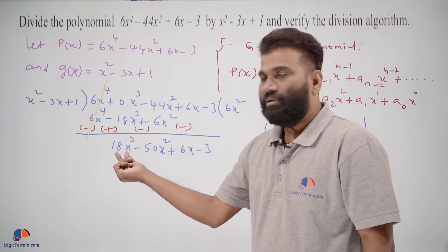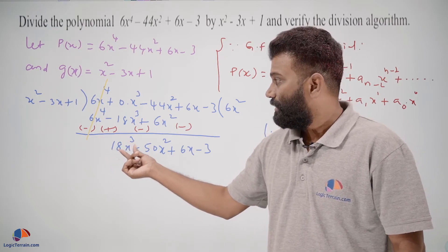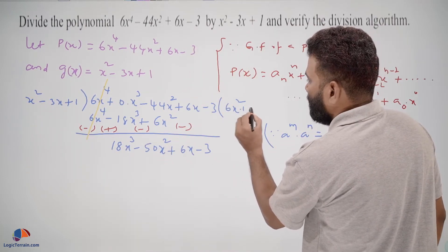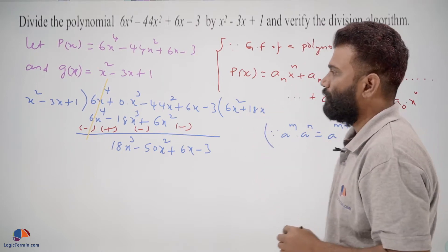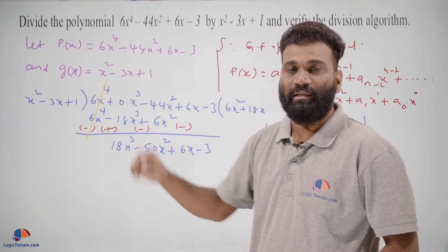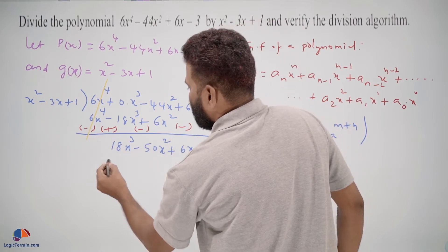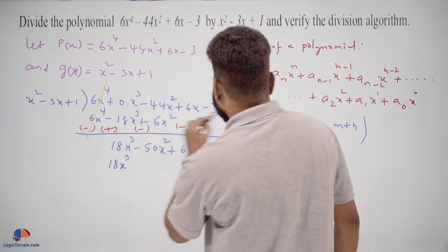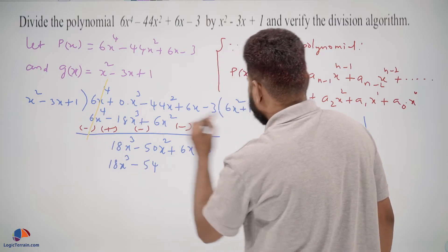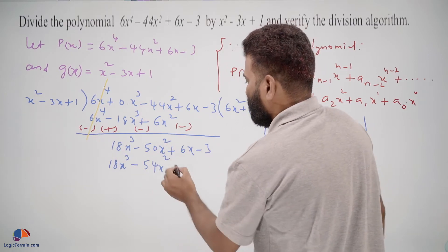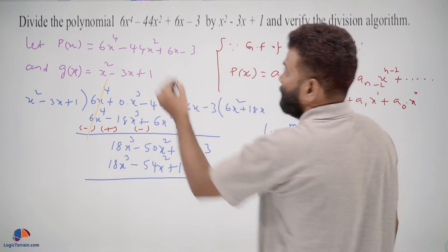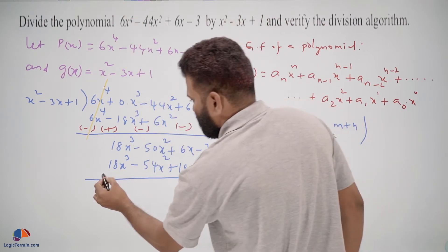Now to get the 18x cube term, we multiply the entire divisor by 18x: 18x times x square gives 18x cube, minus 3 times 18x gives minus 54x square, and plus 1 times 18x gives plus 18x.